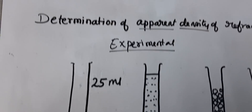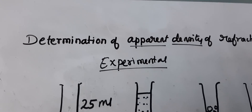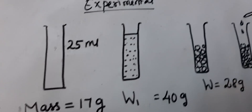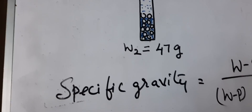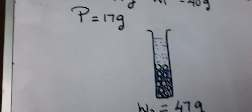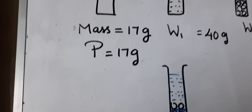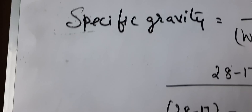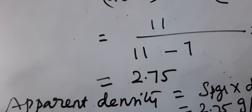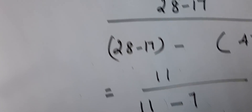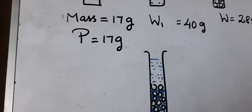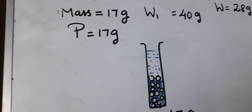So this is the apparent density calculated for the material. I have discussed with you all about the determination of apparent density of a refractory using sample values and calculated the apparent density. In the next video I will show you the experimental part. Thank you.